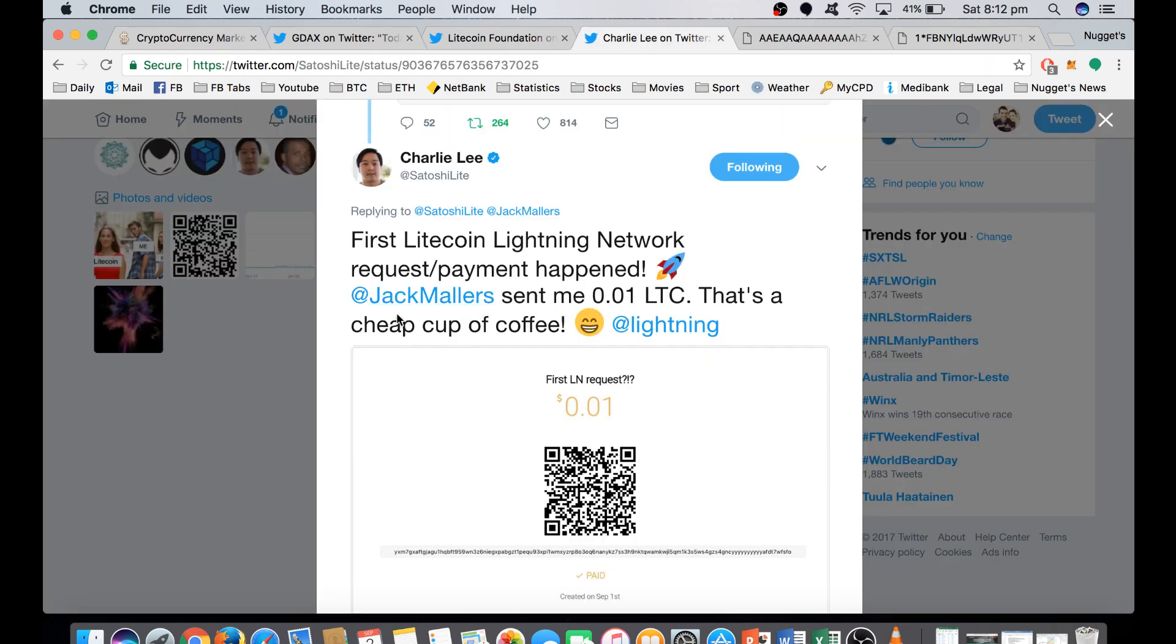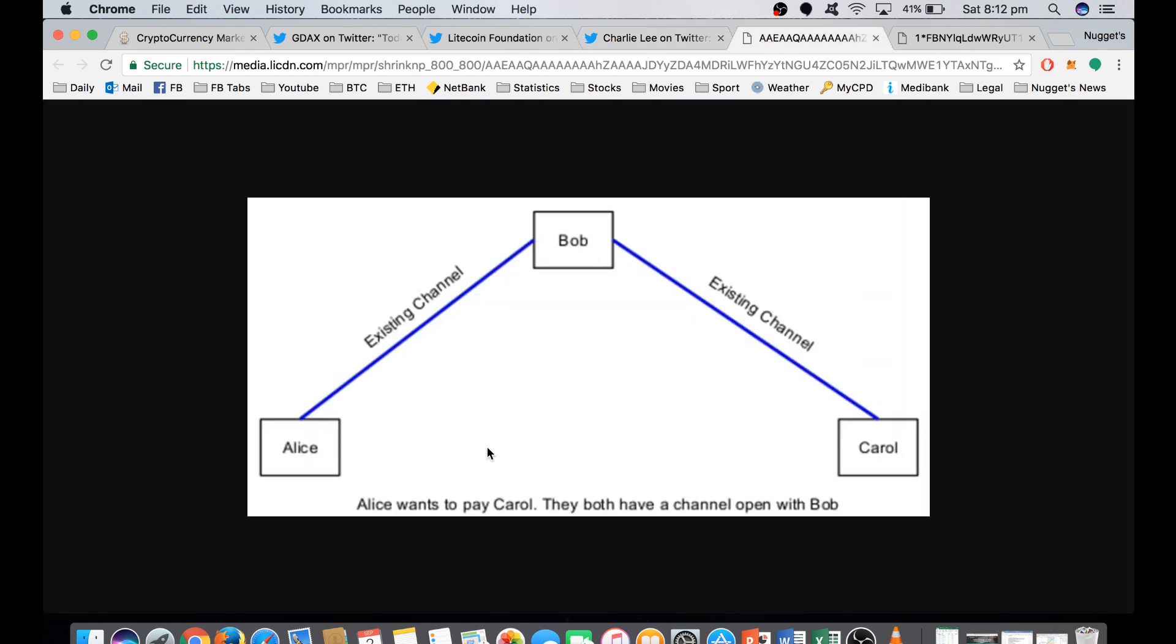So Jack Mullers sent Charlie Lee 0.01 Litecoin. So how does the lightning network differ from the blockchain and the payments that you're probably used to? So traditionally, when going over the network, Alice wants to send Carol some Litecoin. She broadcasts that transaction to the network. The miners verify that. She pays a fee to the miners and Carol receives that Litecoin. And that takes time for that block to be confirmed.